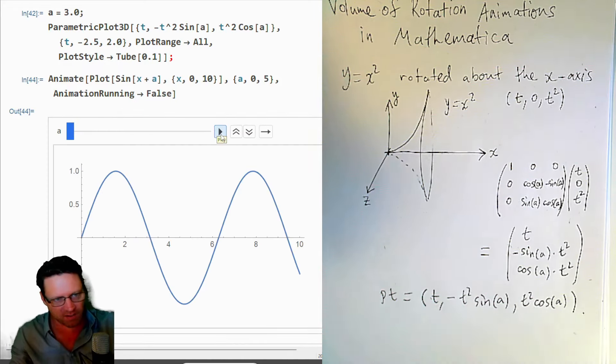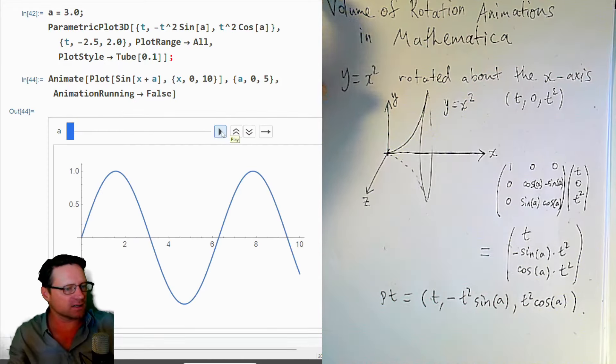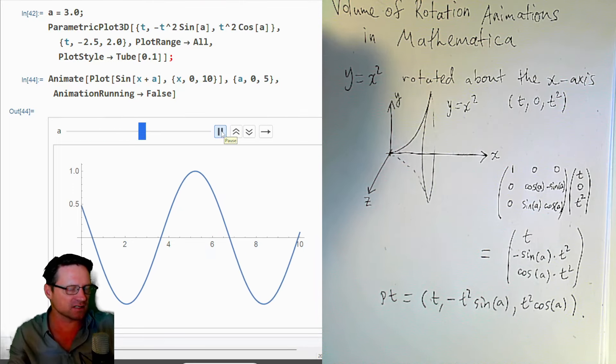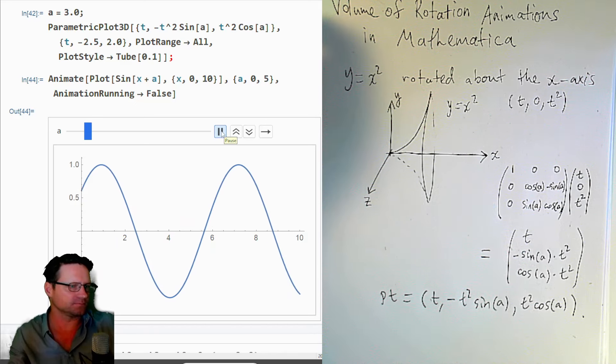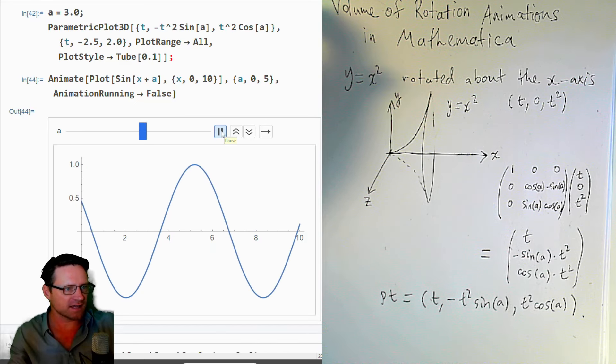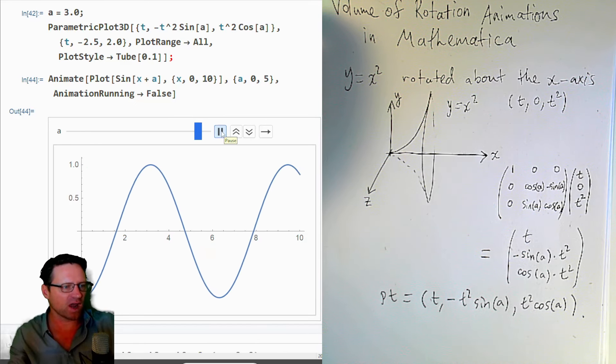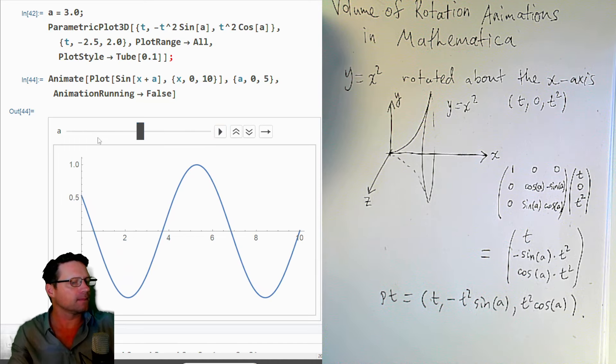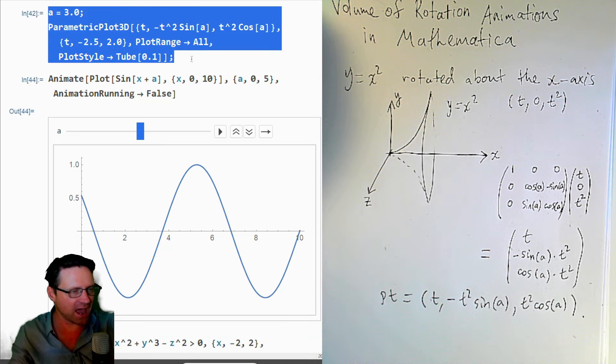So I've just copied this out of the help file. Let's press the button to animate this. We're just animating sine of x plus A as A goes from 0 to 5. And so you see this wave moving right to the left.